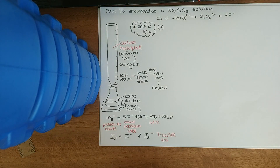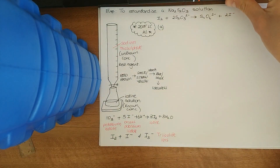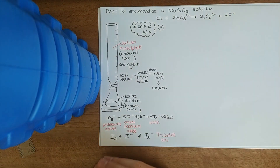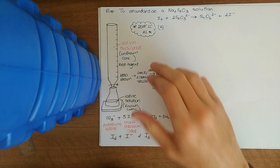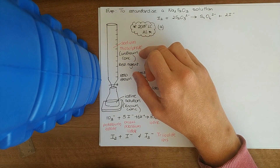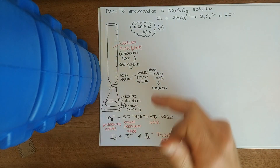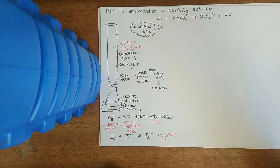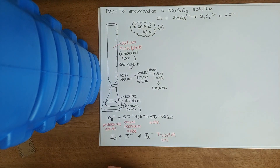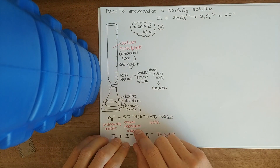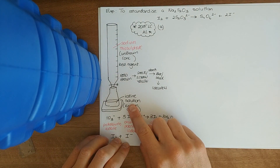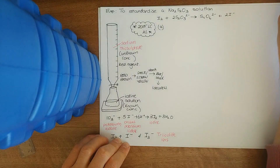The first experiment of the redox reactions is an iodine-thiosulfate one. It's actually an experiment used to work out the concentration of sodium thiosulfate. We need to work out the sodium thiosulfate concentration as we're going to use this to work out the concentration of hypochlorite in bleach. You always need to know the concentration of one of the reagents, so in this we use a standard solution of iodine solution.